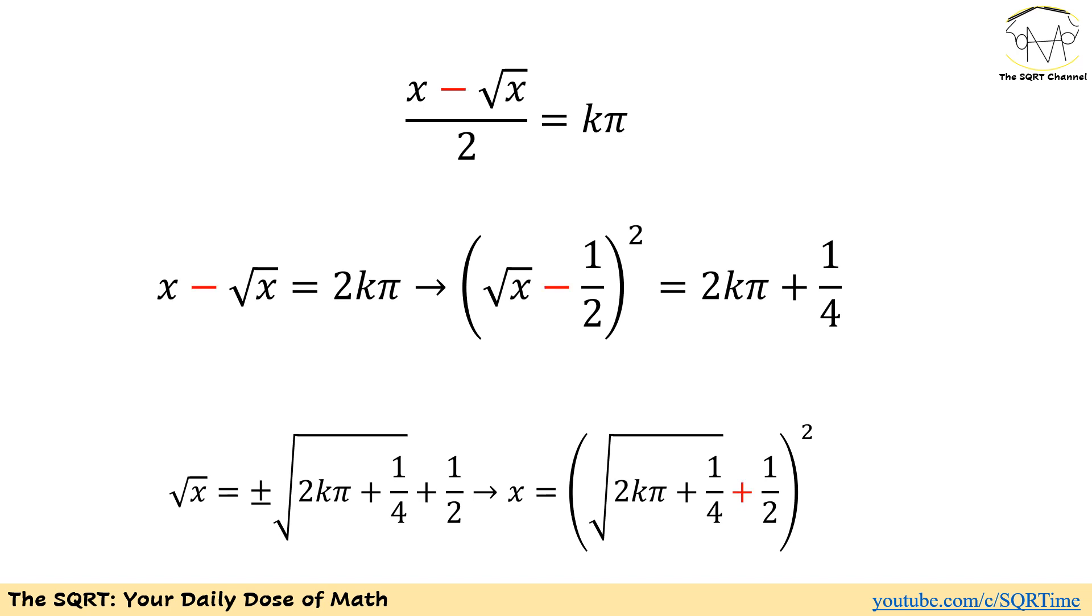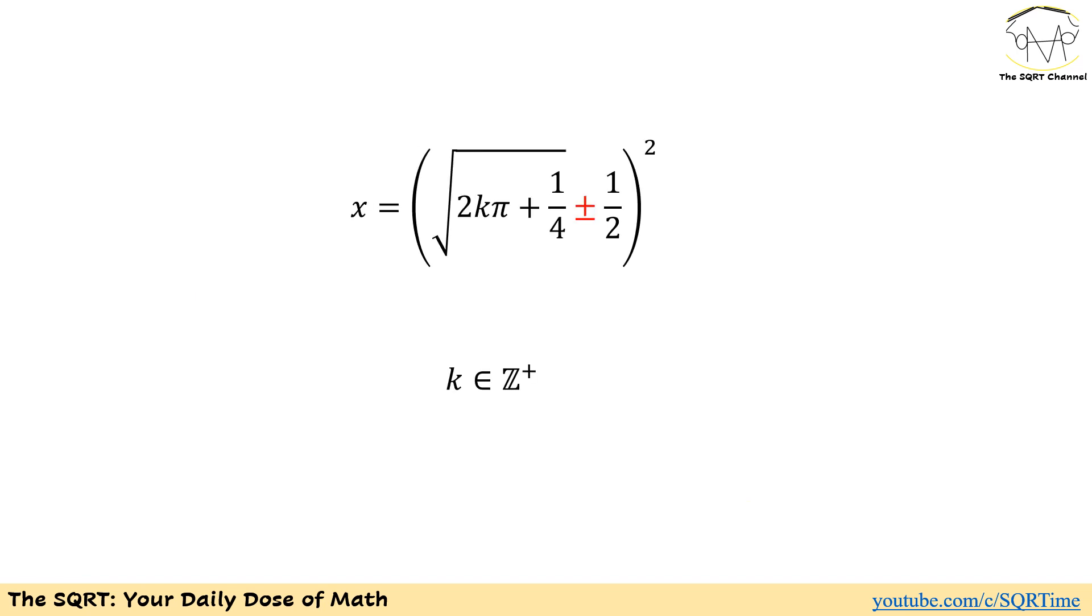The other case is similar. Instead of having x plus radical x over 2, we have x minus radical x over 2. If you apply the same approach, then x is going to be the power of 2 of radical of 2k pi plus 1 over 4 plus 1 over 2. So overall, we are going to have all possible cases that cover the cases that we discussed. x is going to be the power of 2 of radical 2k pi plus 1 over 4 plus minus 1 over 2 for 0 or positive integers for k.